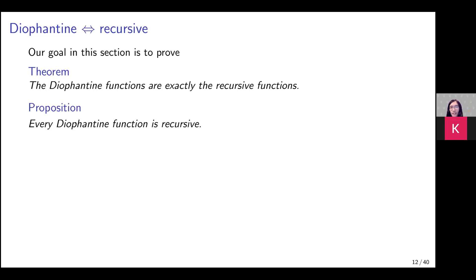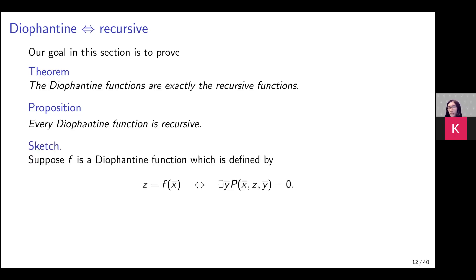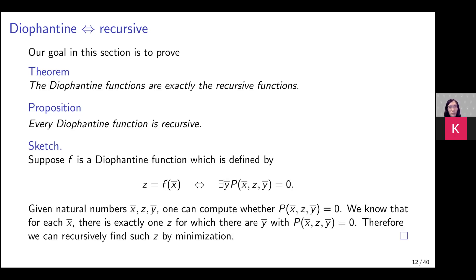One direction of this theorem is quite easy — it's easy to see that every Diophantine relation is recursive. Suppose we have a Diophantine function. That means: z equals f(x) if and only if there exists some y such that P(x, z, y) equals zero. Why is this recursive? For each x and z, we can do an unbounded search for some y which makes P(x, z, y) equal to zero, literally by brute force.